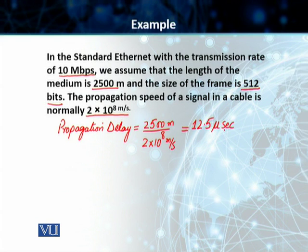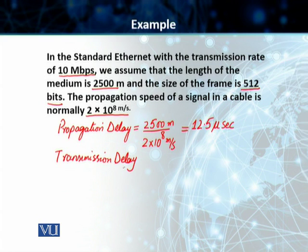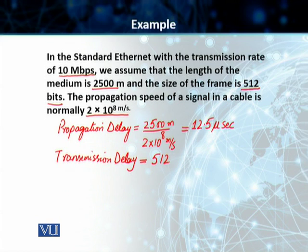The transmission delay is also needed. We are calculating both the propagation delay and the transmission delay so that we can find the value of 'a'. The transmission delay equals the size of the frame — 512 bits — divided by the transmission rate of 10 megabits per second (10⁷), which gives us 51.2 microseconds.